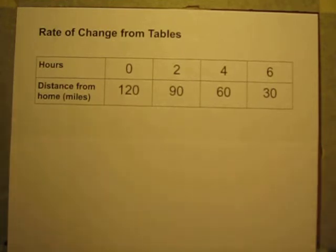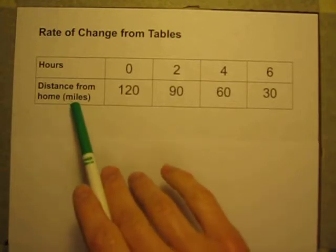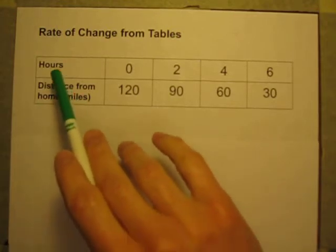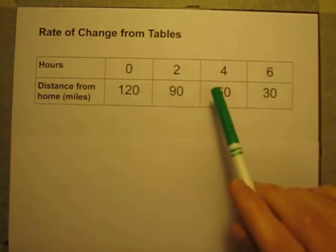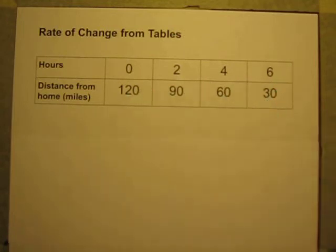So for this data table that I'm showing you here, it's telling a little story. It's telling you a story about something, and we're keeping track of its distance from home in miles as the hours go by from 0 to 6. It looks like the distance is decreasing, so the distance from home is decreasing, that means they must be getting closer and closer to home as the hours go by.